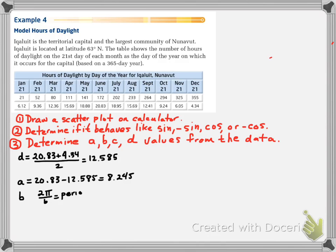Next, the b value. Well, 2π divided by b is the period. We know for the days of the year, the period will be 365. So, when I calculate b, cross multiply and divide, b is going to be 2π divided by 365.